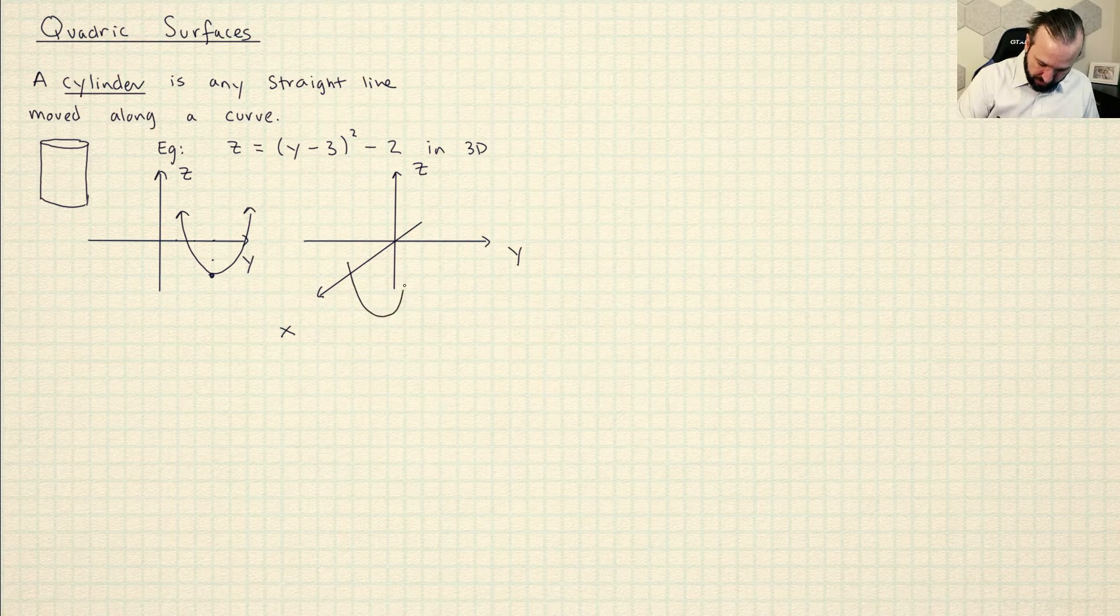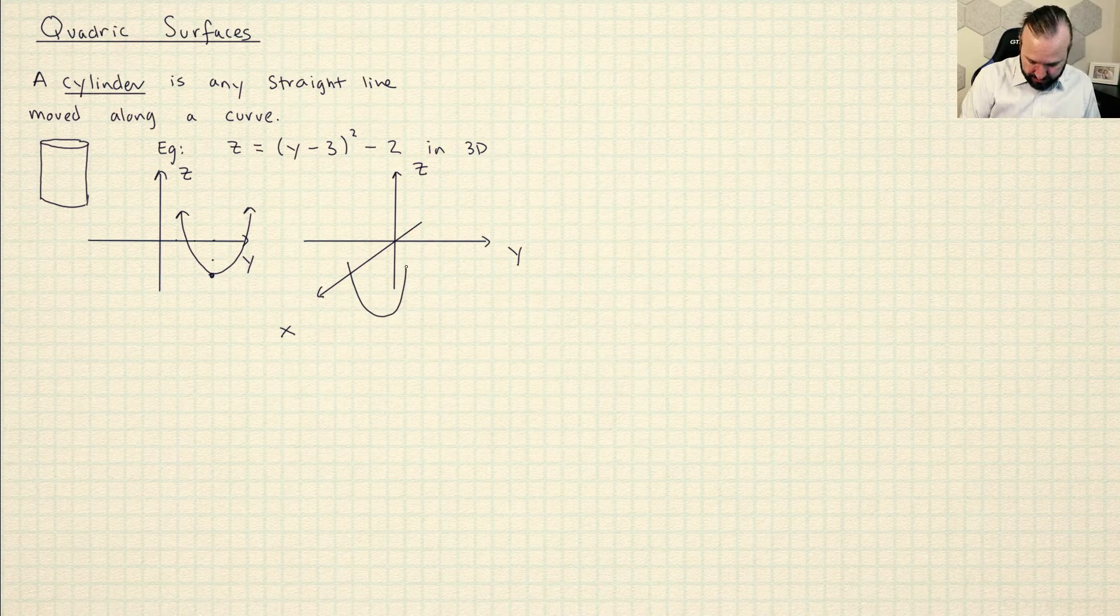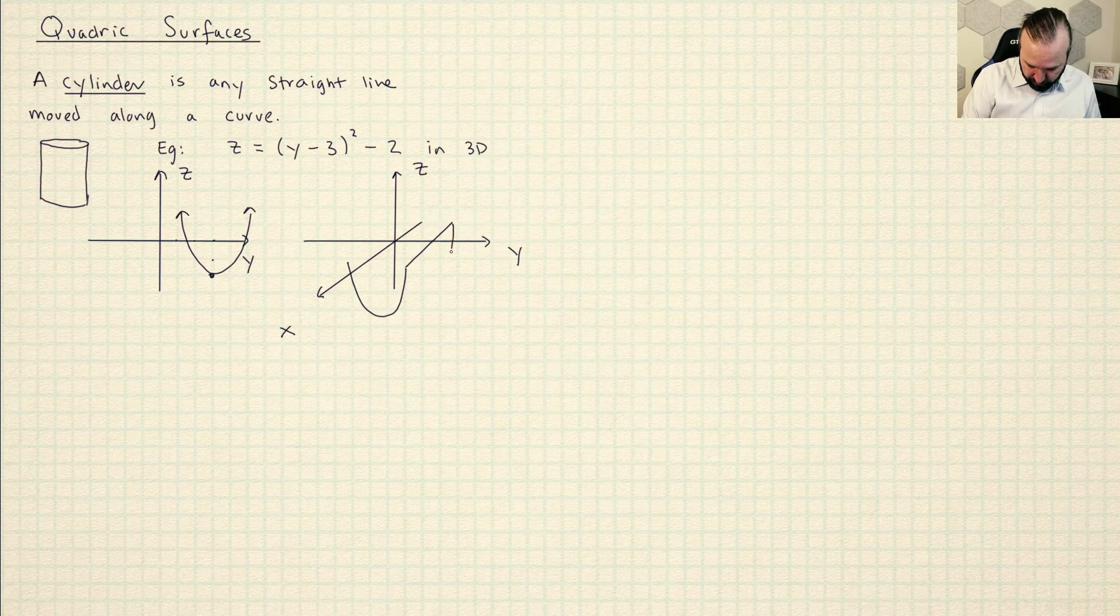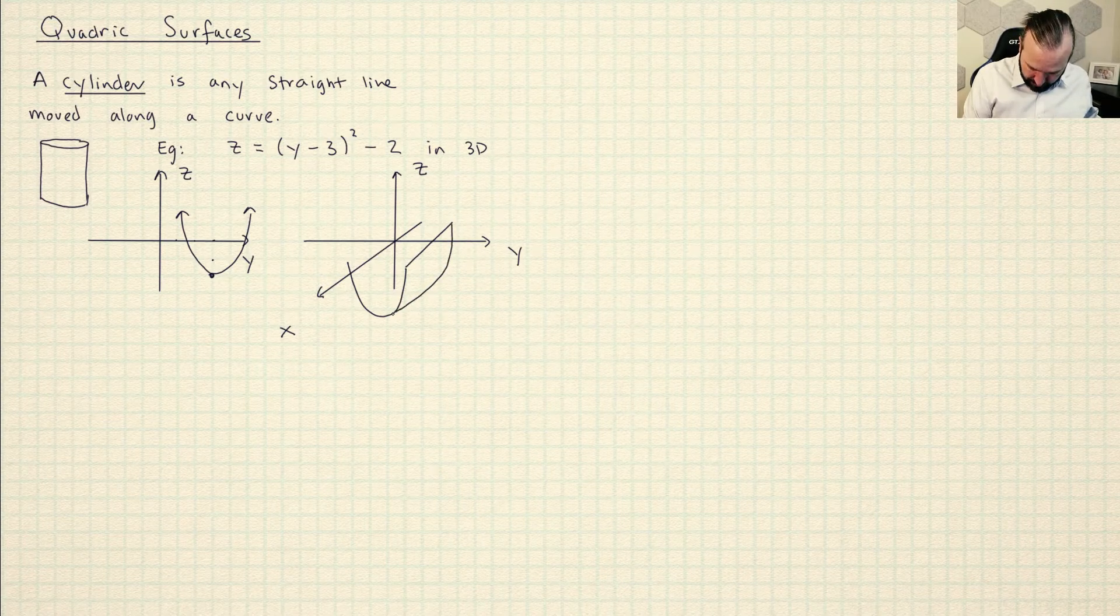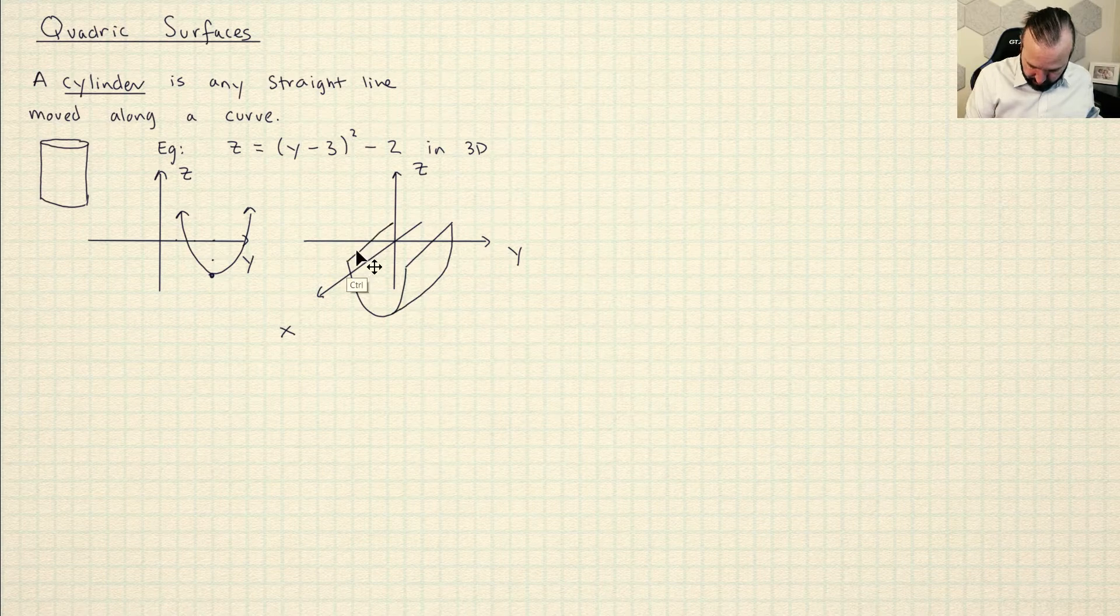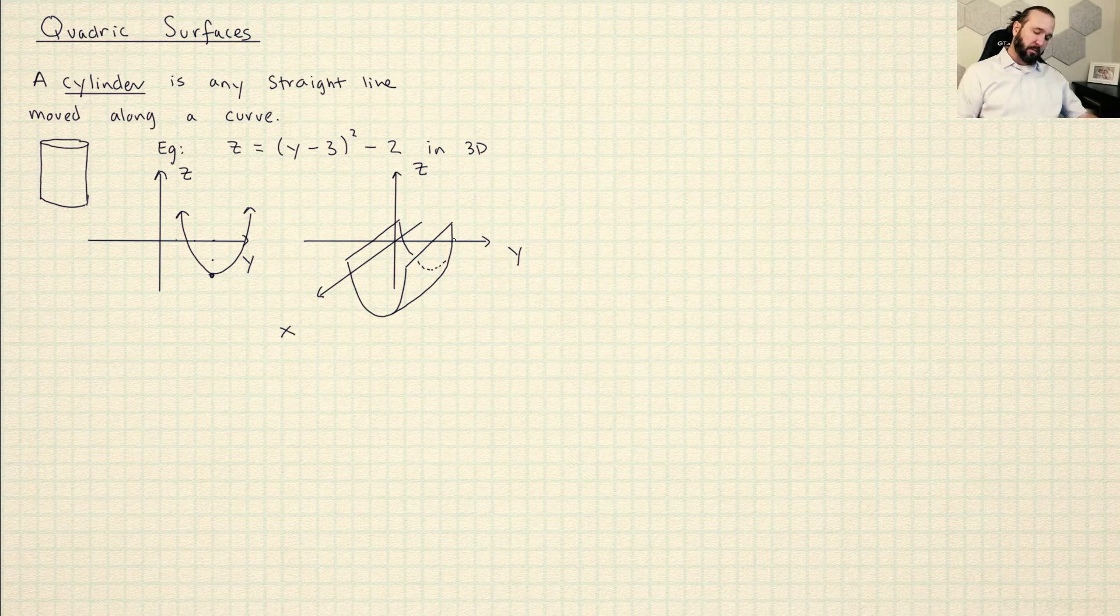So maybe I'll start by drawing one that's out here. And then it's the same parabola that goes all the way back and all of these everywhere down along the Z axis. So I get a kind of graph like this. It's not perfect, but there you get the idea.